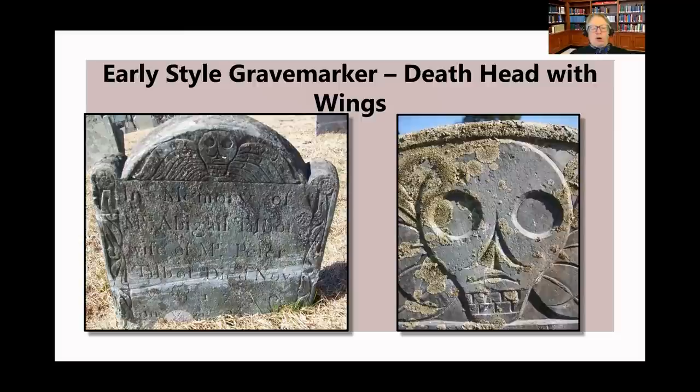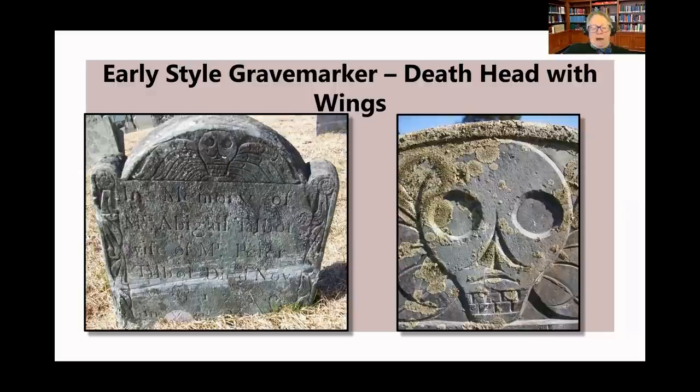The earliest style of grave marker was a death's head with wings. Notice the stylized teeth in the image on the right and the triangular nose where flesh and cartilage have rotted away. Puritans were fearful of death and because they believed in predestination, they did not believe in a guarantee of being saved after death. Puritans also did not believe in making any lifelike representation of the divine, so a totally un-lifelike skull adorned the grave markers.